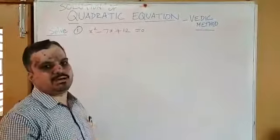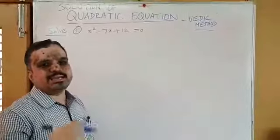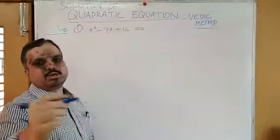Solution for the quadratic: x is equal to minus b plus or minus root of b square minus 4ac by 2a.